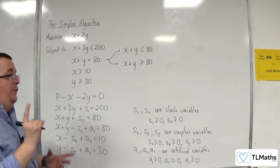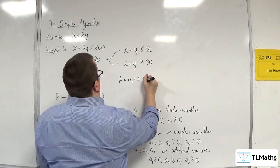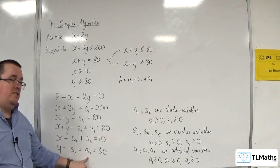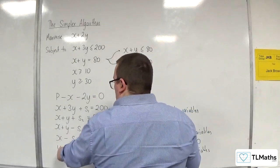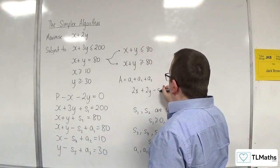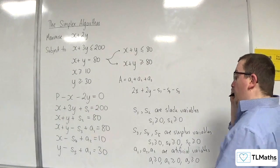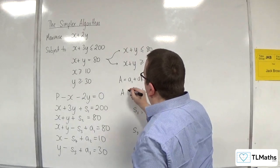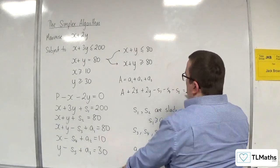We need to set up capital A, which is a1 plus a2 plus a3 in this case, by adding the three equations together. So x plus x is 2x, y plus y is 2y. Then we take away s3, take away s4, take away s5, plus the three artificial variables a1 plus a2 plus a3, which is A. That equals 80 plus 10 plus 30, so 120.